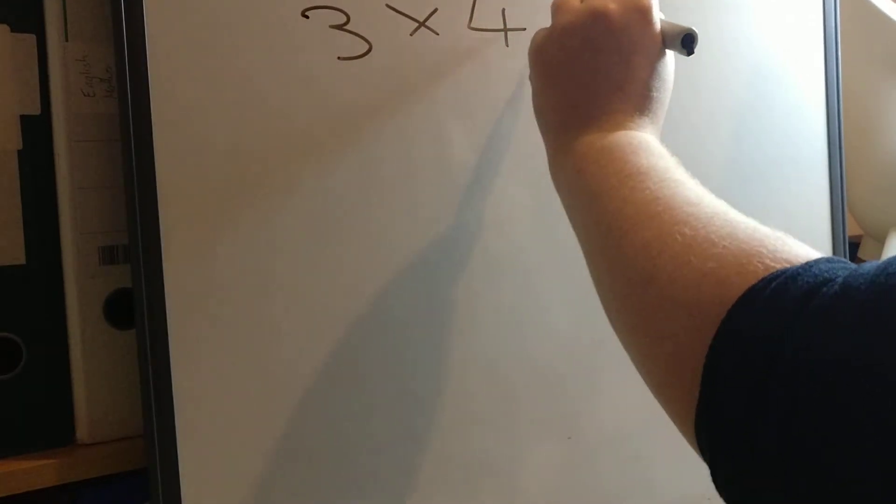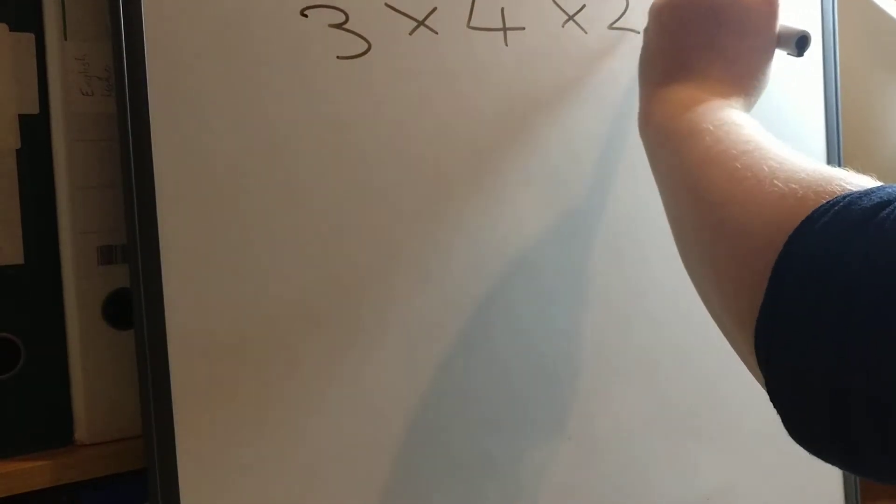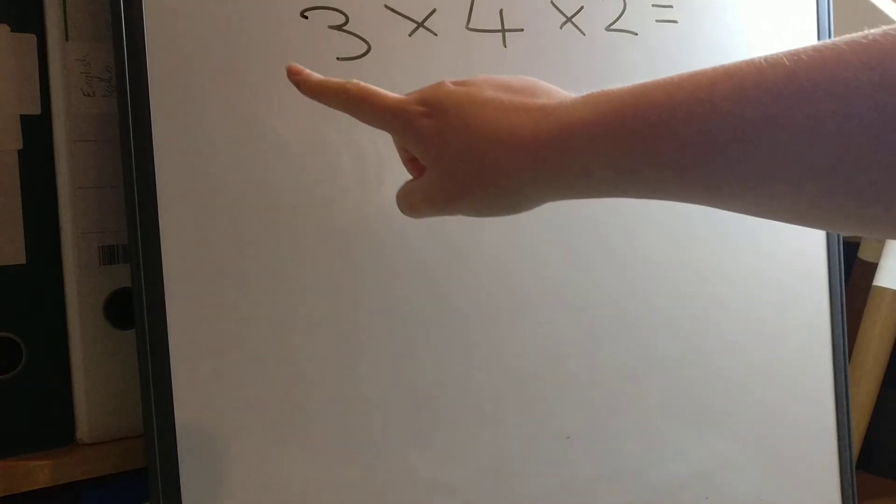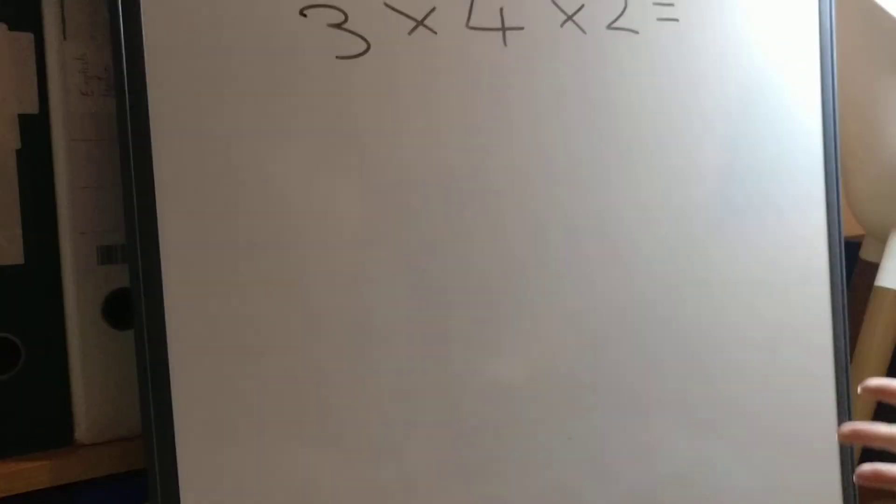Good morning Year 4, it's Miss Oldell here and we are going to learn how to multiply three numbers together. So when I say that I'm talking about questions that look a little bit like this. So we have three numbers and we want to multiply them all together.